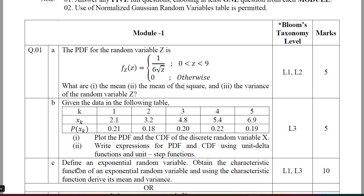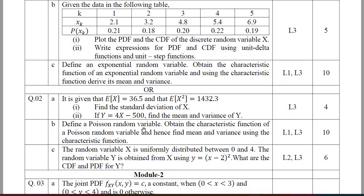For question number 1C, you are required to define the exponential random variable, obtain its characteristic function, and using the characteristic function derive its mean and variance. Out of these three, question 1A will be compulsory, and the problem on CDF and PDF will also be compulsory.